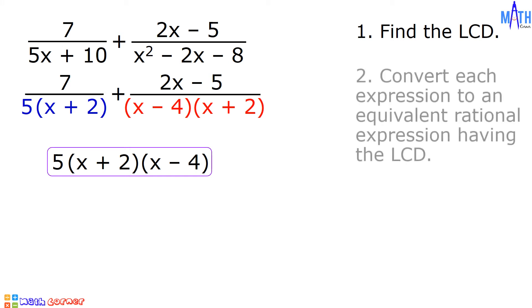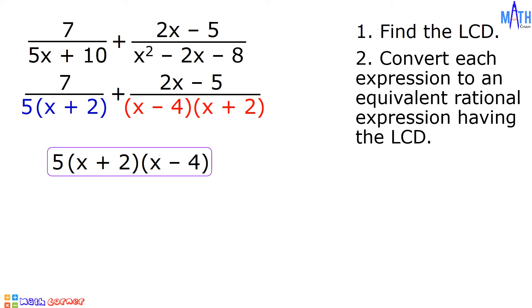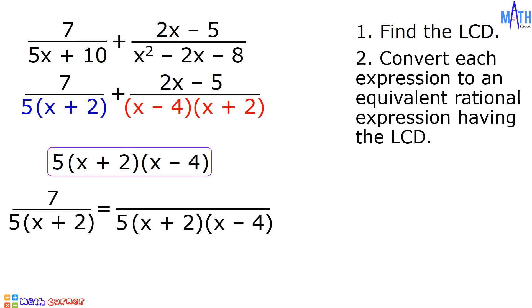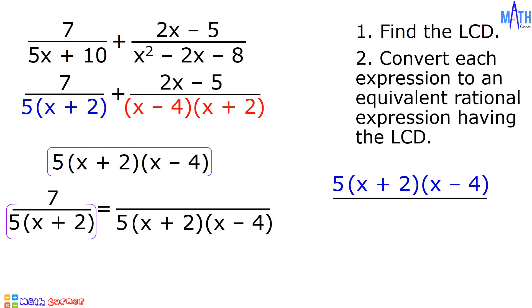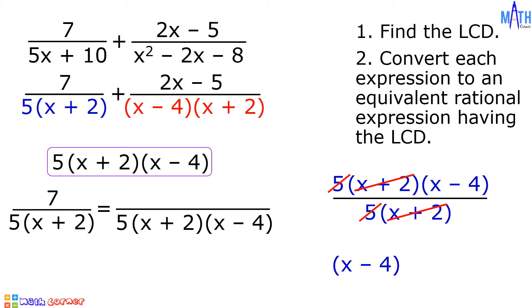Next step, let us convert each expression to an equivalent rational expression having the LCD. Let us convert 7 over 5 times quantity x plus 2. To convert this, let us divide the LCD by the denominator 5 times quantity x plus 2. Cancel out the common factors: cancel out 5 and cancel out x plus 2. We are left with x minus 4. Next, let us multiply the numerator, which is 7, by x minus 4. 7 times quantity x minus 4 is equal to 7x minus 28. And this is the numerator.